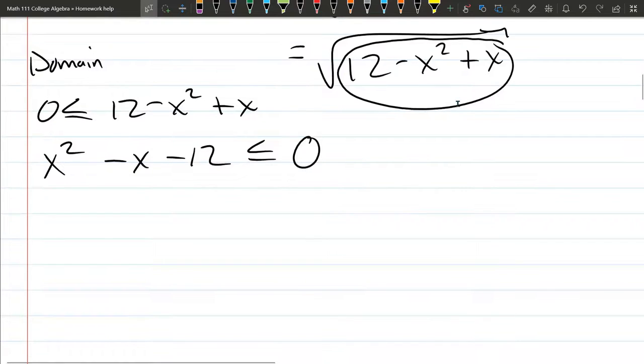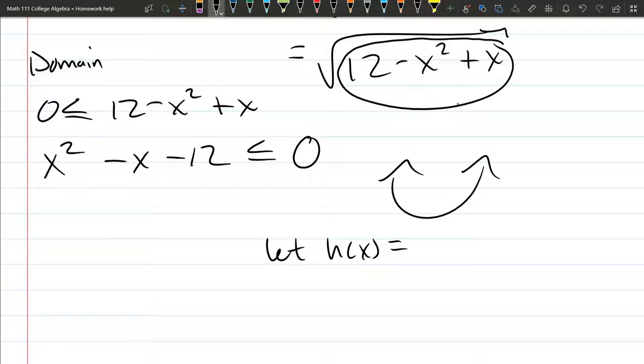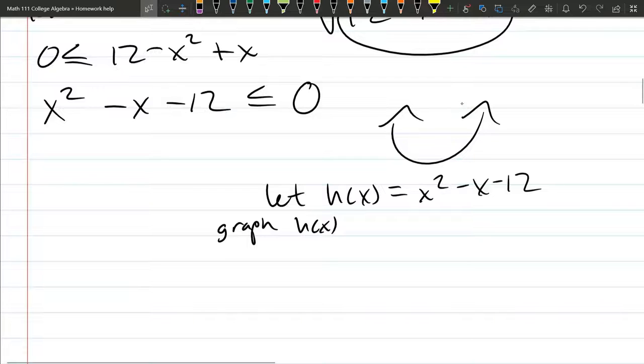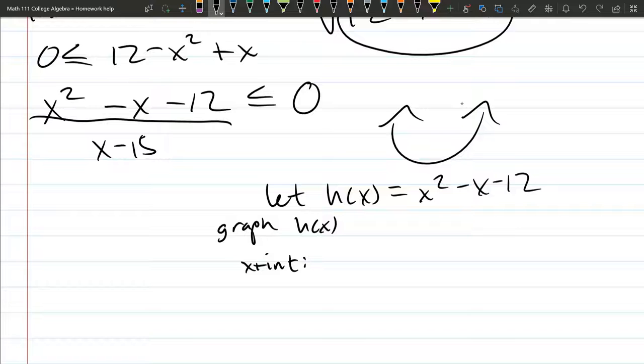So we're going to solve this inequality. There's a couple ways to do it. I have a happy parabola. And I need to know the x-intercepts. So I'm going to create a new function. I'm going to let h of x equal the parabola. x squared minus x minus 12. I need to graph h of x. The important parts are the x-intercepts. So let's go ahead and find the x-intercepts. If you had a rational function, meaning it was maybe divided by x minus 15, then you would also need to pay attention to the vertical asymptotes. But luckily, we only have a quadratic. So we only need the x-intercepts.